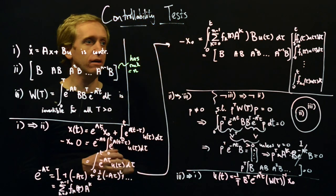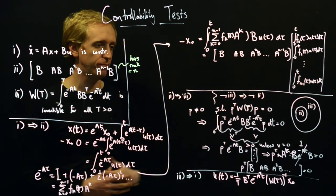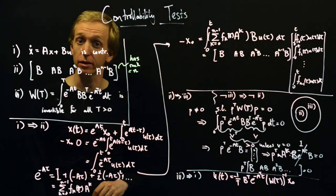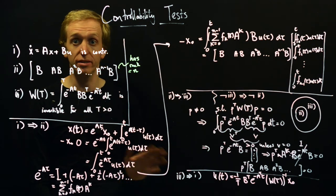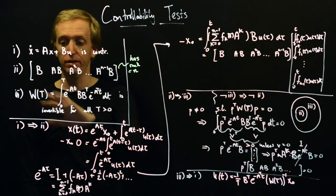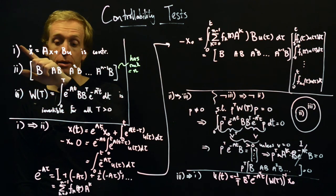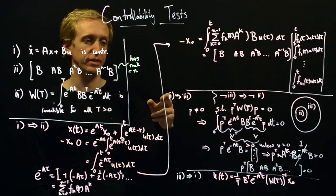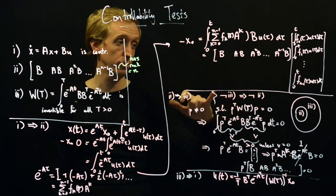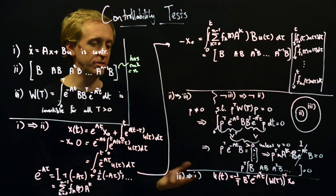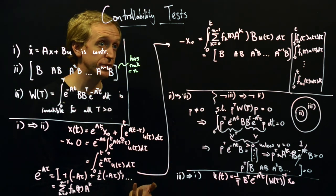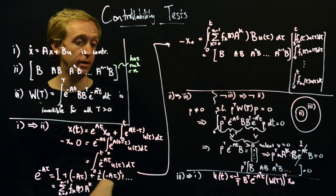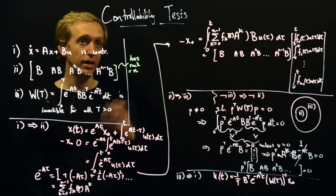We've now shown some controllability tests, completing a formal proof using interesting strategies: building equivalent statements and showing equivalence through the chain one implies two, two implies three, three implies one. We also used the trick that not-three implies not-two is equivalent to two implies three. Along the way we used the Cayley-Hamilton theorem and finally saw where the controllability test comes from.